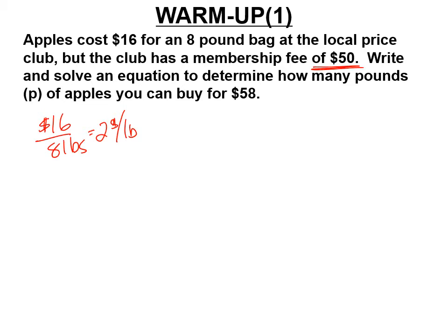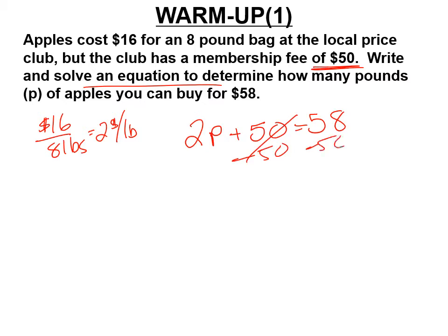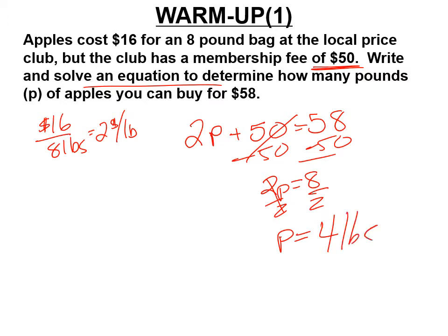Write and solve an equation to determine how many pounds of apples you can buy for $58. The rate is your coefficient, $50 is your constant, and $58 is your total. So solving the equation: 2p equals 8, divide by 2, and p equals 4 pounds of apples.